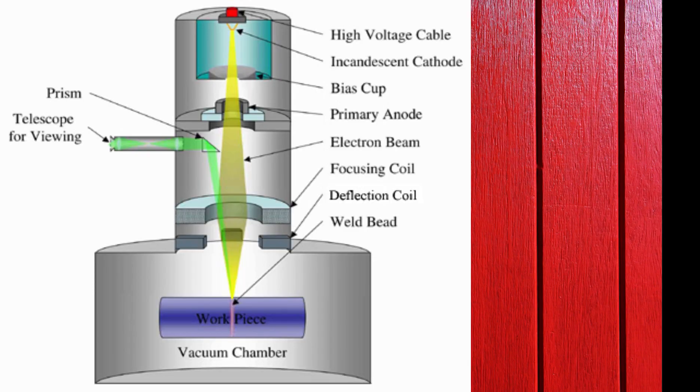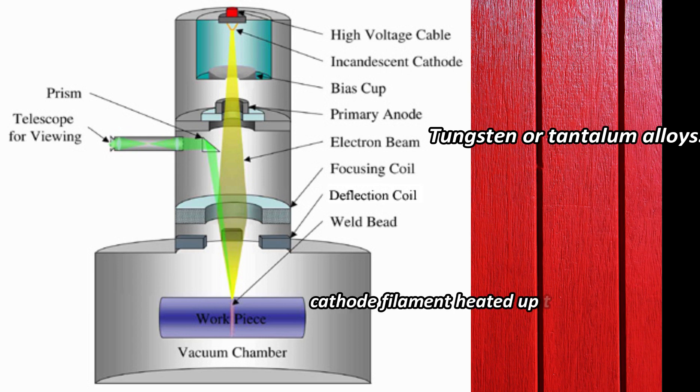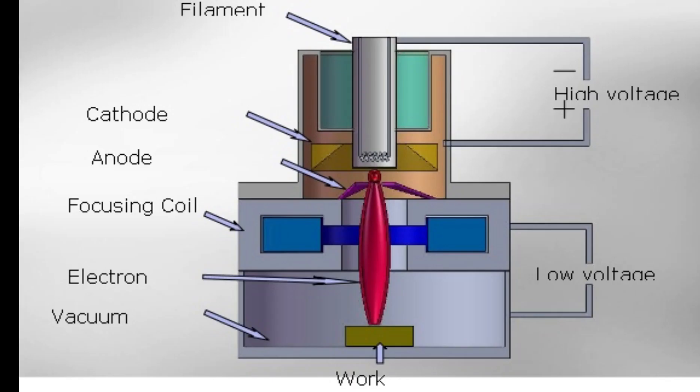The next and very important component is the electron gun. It is the heart of electron beam welding. It is a cathode tube (negative pole) which generates electrons, accelerates them, and focuses it on a spot. This gun is mostly made by tungsten or tantalum alloys. The cathode filament is heated up to 2500 degrees Celsius for continuous emission of electrons.